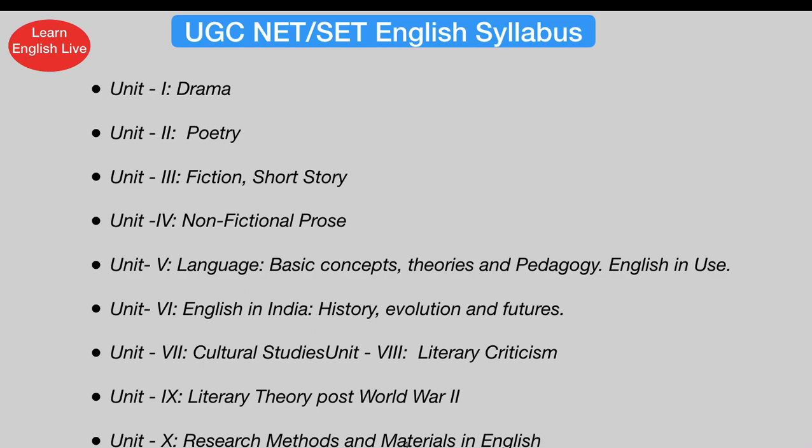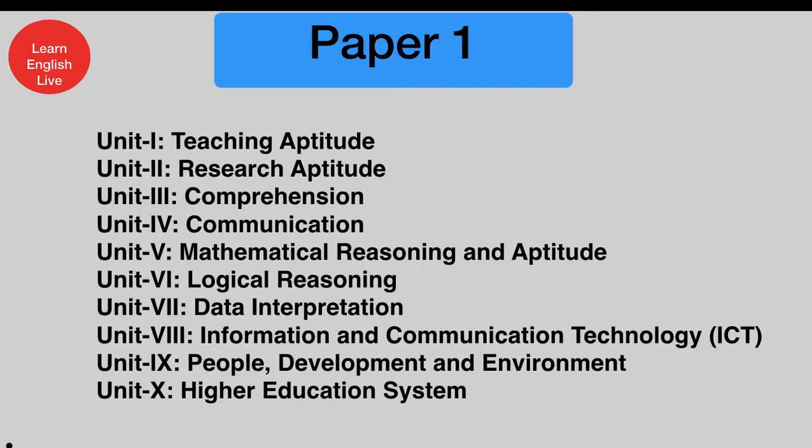For UGC NET SET English syllabus, NTA has given ten topics with no in-depth detail. Unit 1 is Drama, Unit 2 is Poetry, Unit 3 is Fiction and Short Story, Unit 4 is Non-fictional Prose, Unit 5 is Language — Basic Concepts, Theories and Pedagogy, English in Use, Unit 6 is English in India — History, Evolution and Futures, Unit 7 is Cultural Studies, Unit 8 is Literary Criticism, Unit 9 is Literary Theory post-World War Two, and Unit 10 is Research Methods and Materials in English.